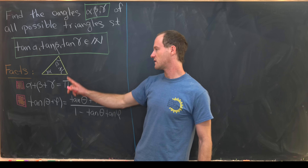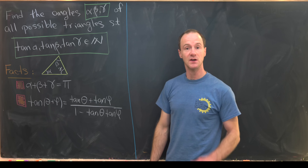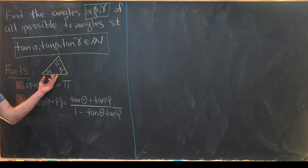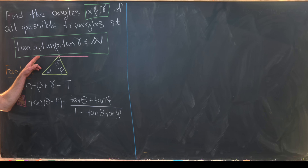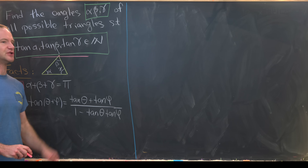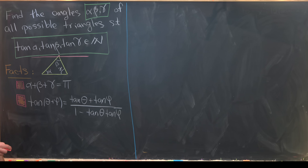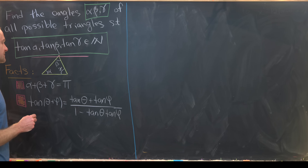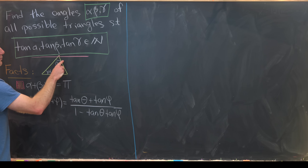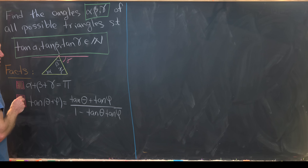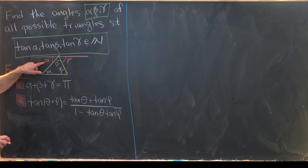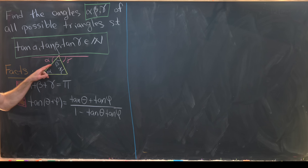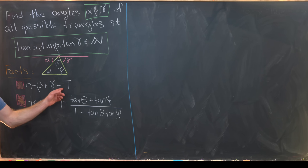Since we've got a triangle drawn here, let's quickly sketch the proof that the angle sum is π. We take the base of the triangle, then draw a parallel line through the top vertex. We know there's a unique such line in the plane — flat space. From standard angle chasing, the angle gamma at the top equals gamma at the base, and alpha at the top equals alpha at the base.